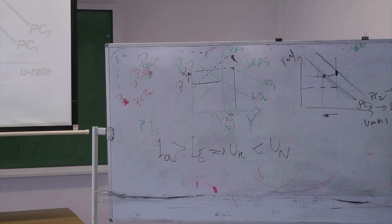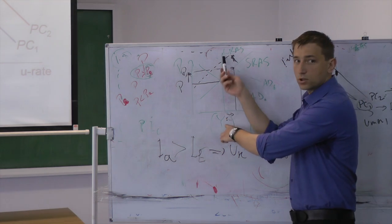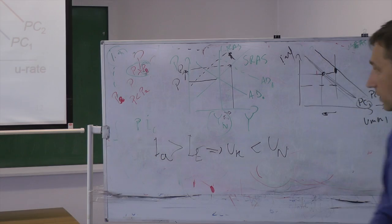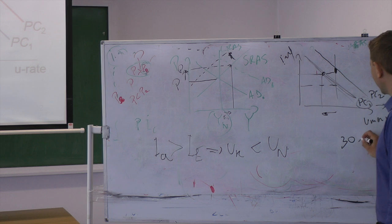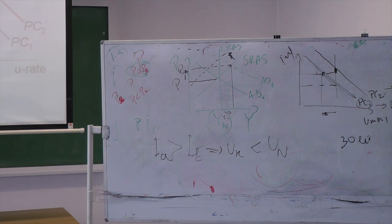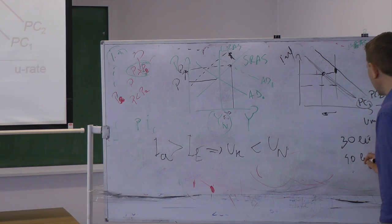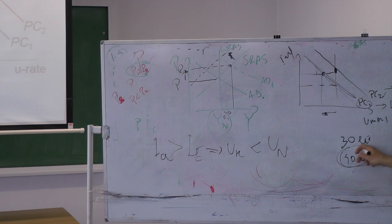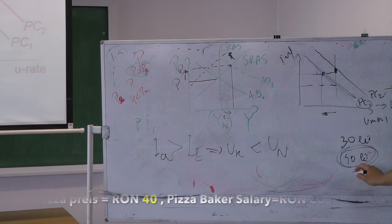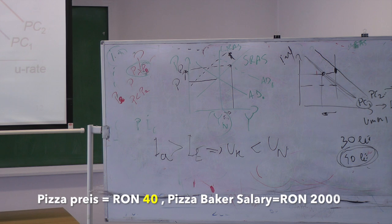So let's suppose a pizza capricciosa sells for 30 lei, and the cook, the baker that makes the pizza is earning, I don't know, 2,000 lei per month net. And now you can sell your capricciosa with 40 lei, with prosciutto. And your baker is still making 2,000 lei. This is great.